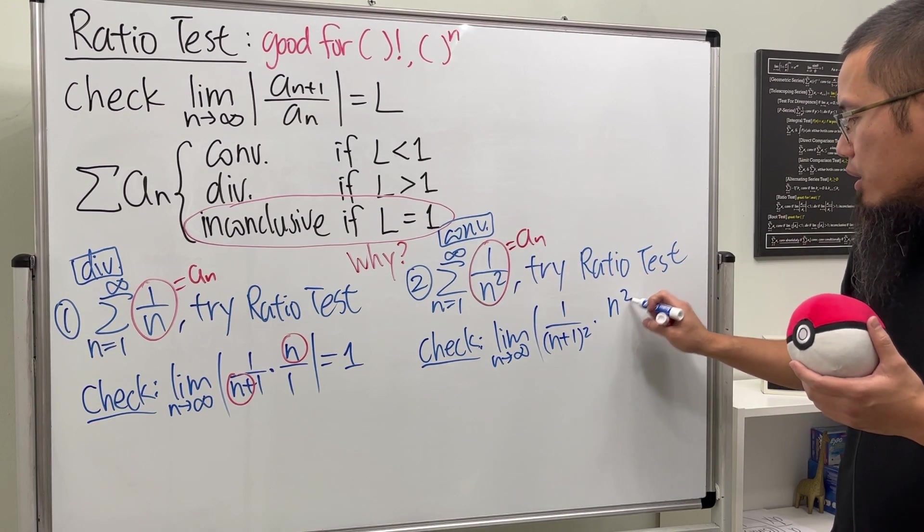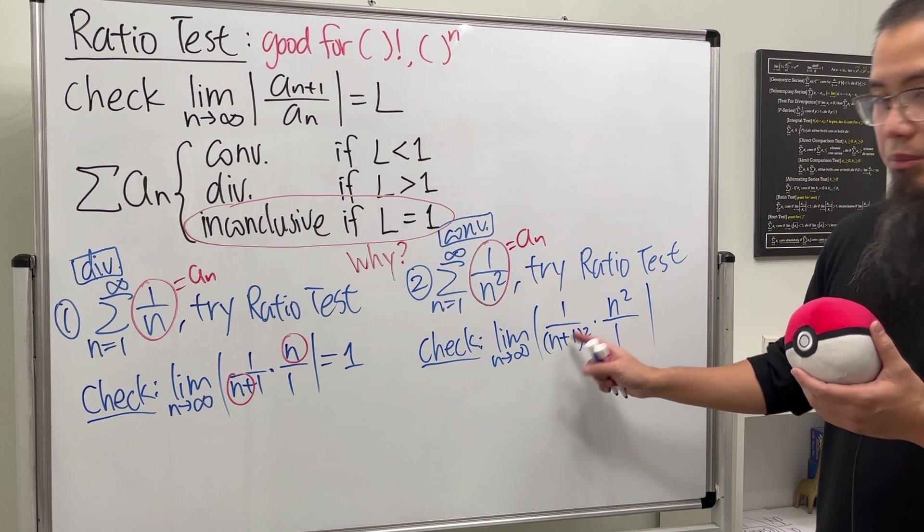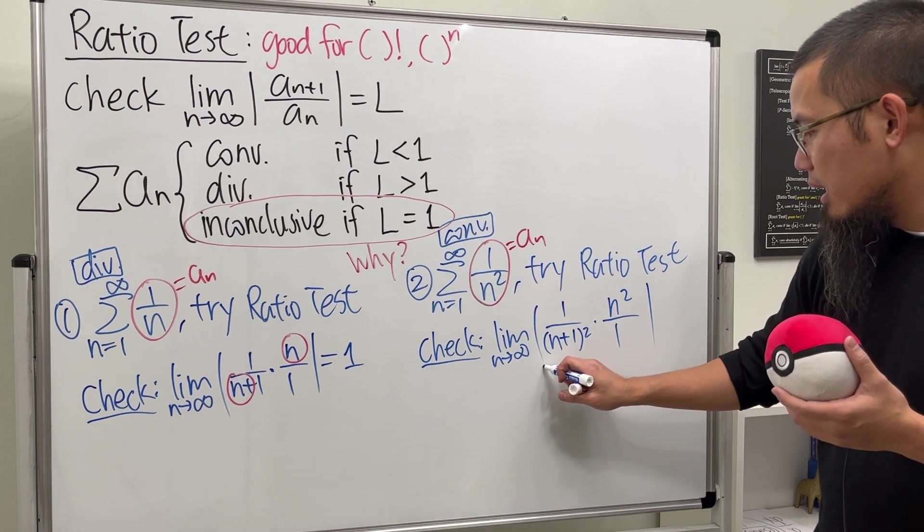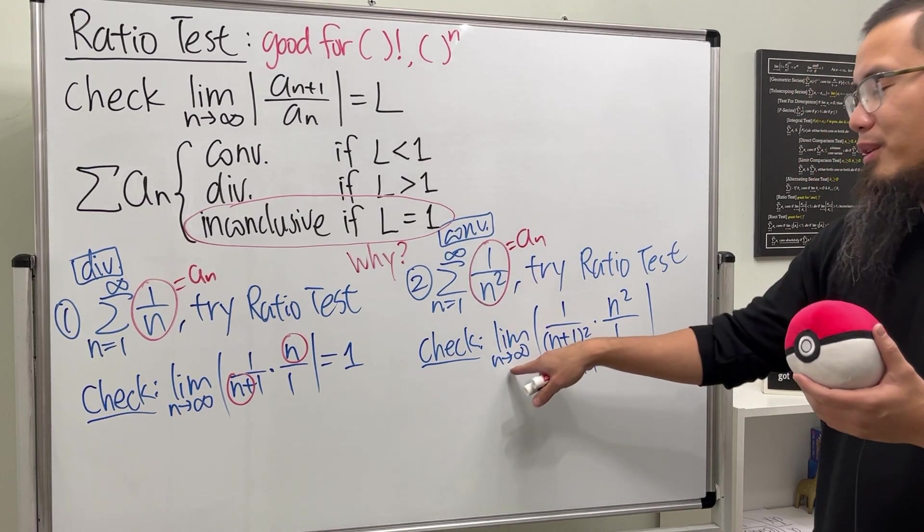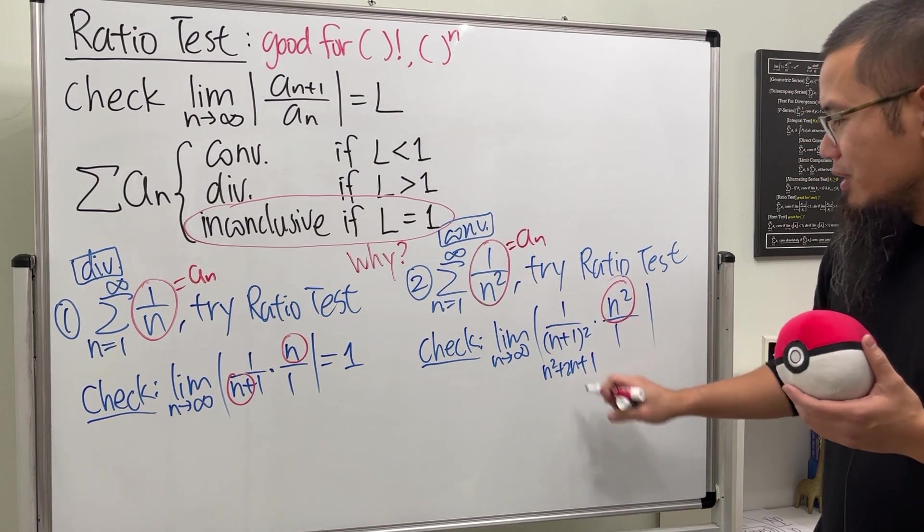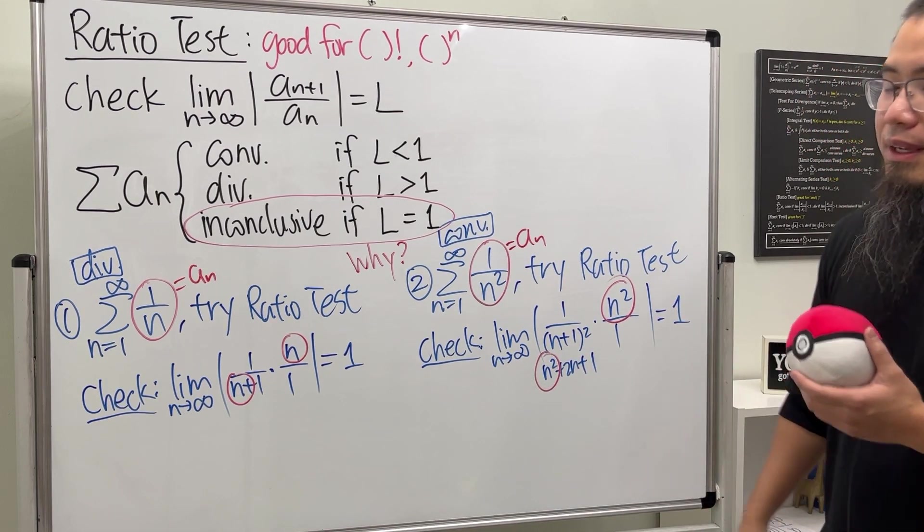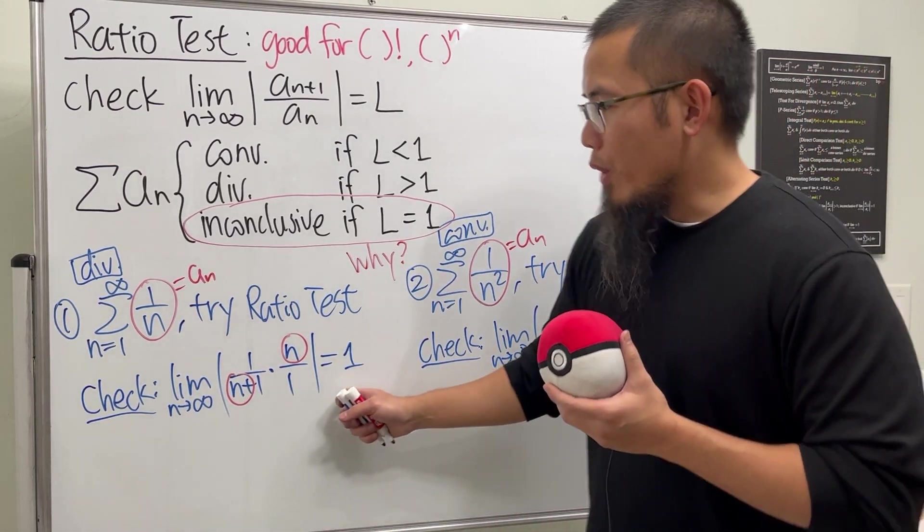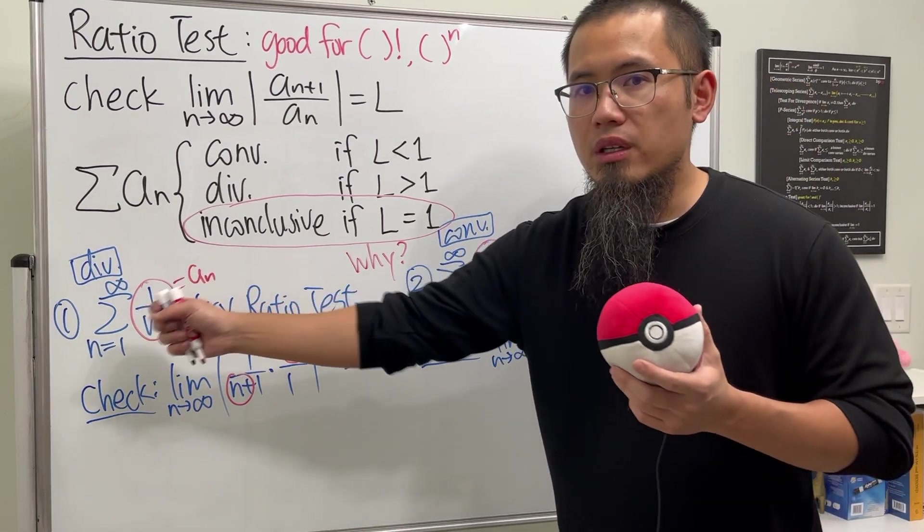And depends on how you want to do it, you can multiply this out real quick, which we get n squared plus 2n plus one. And because n goes to infinity, again you can just do this way, like the pre-calculus way to take the limit, and again you end up with one. So as you can see, when you get one from the ratio test, it can go either direction.